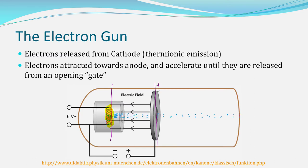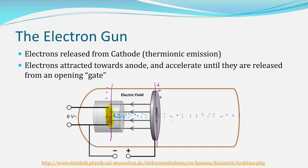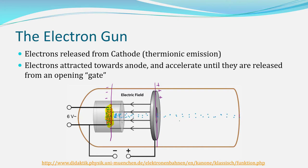If you have a positively charged plate on one side and a negatively charged plate on the other, you're attracting the electrons to that plate so they will move and accelerate. Once they leave the positive plate and are under no electric field, they will travel at a constant velocity and constant direction — which is why you see the electrons travelling in a straight line once they leave.